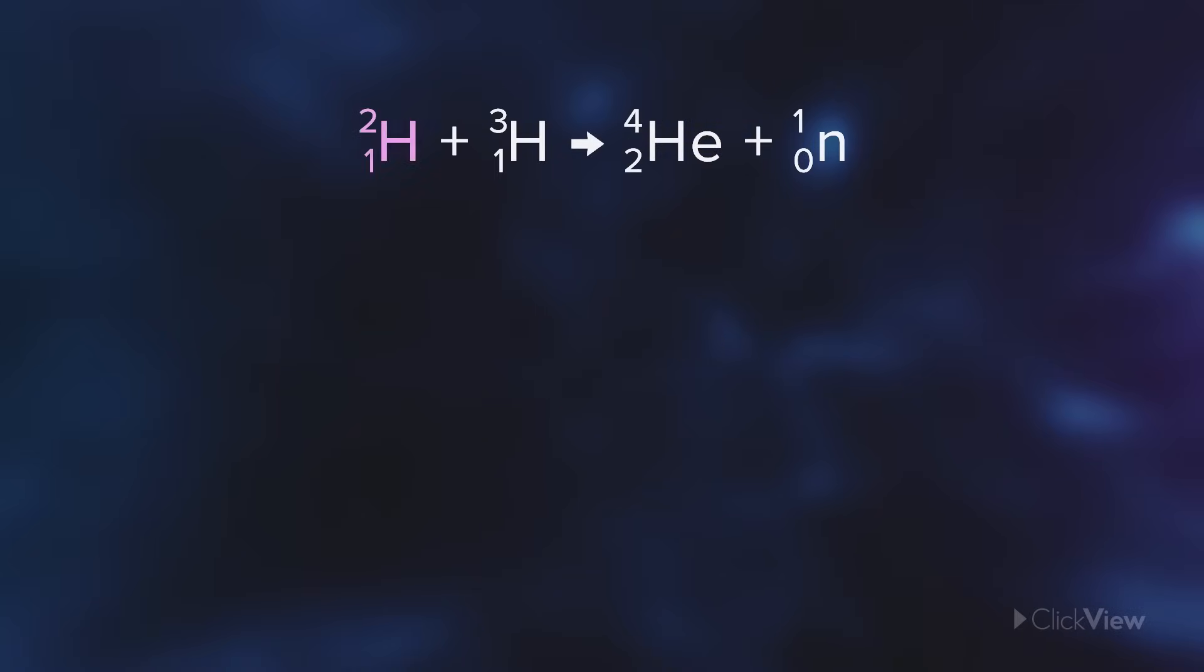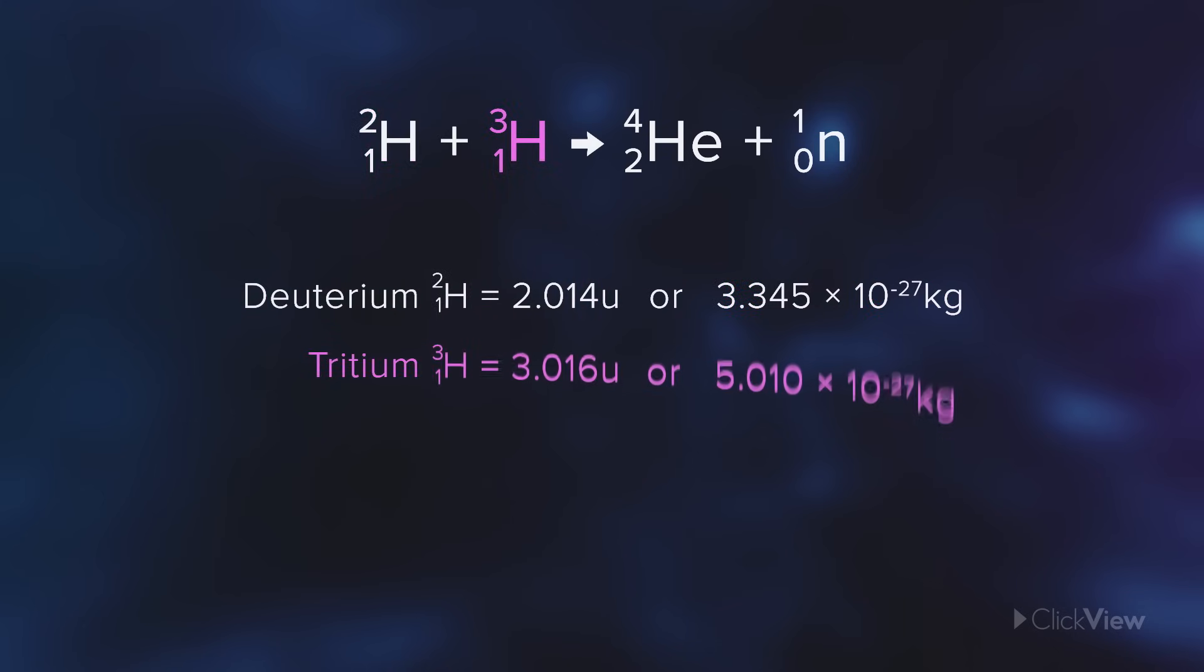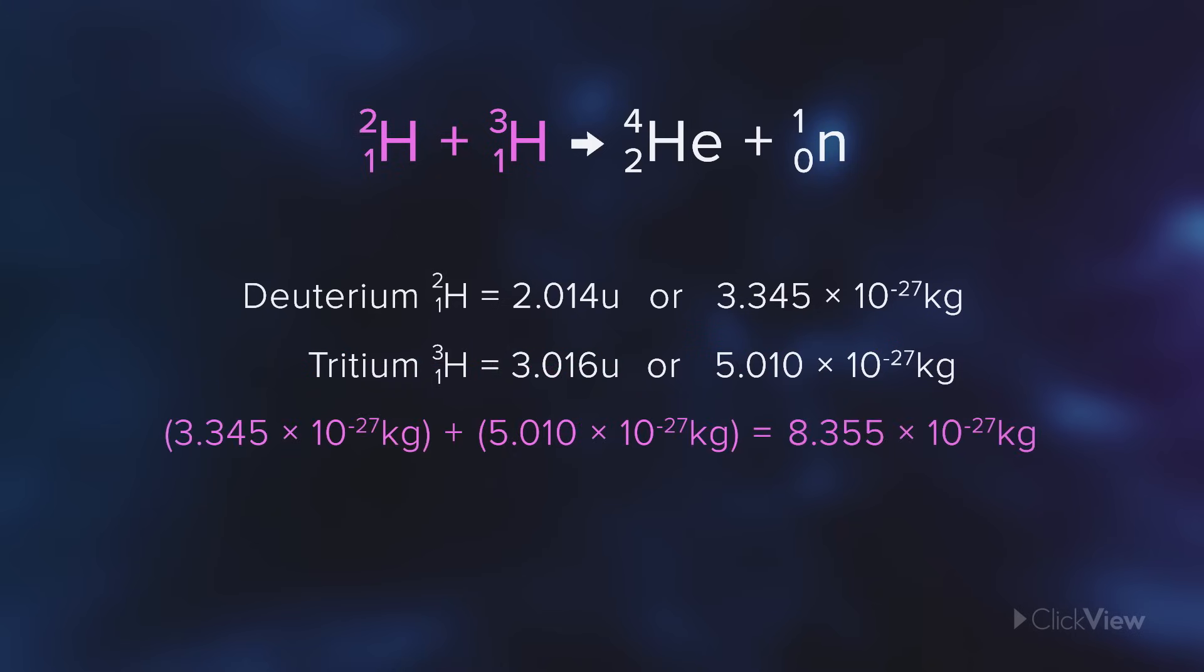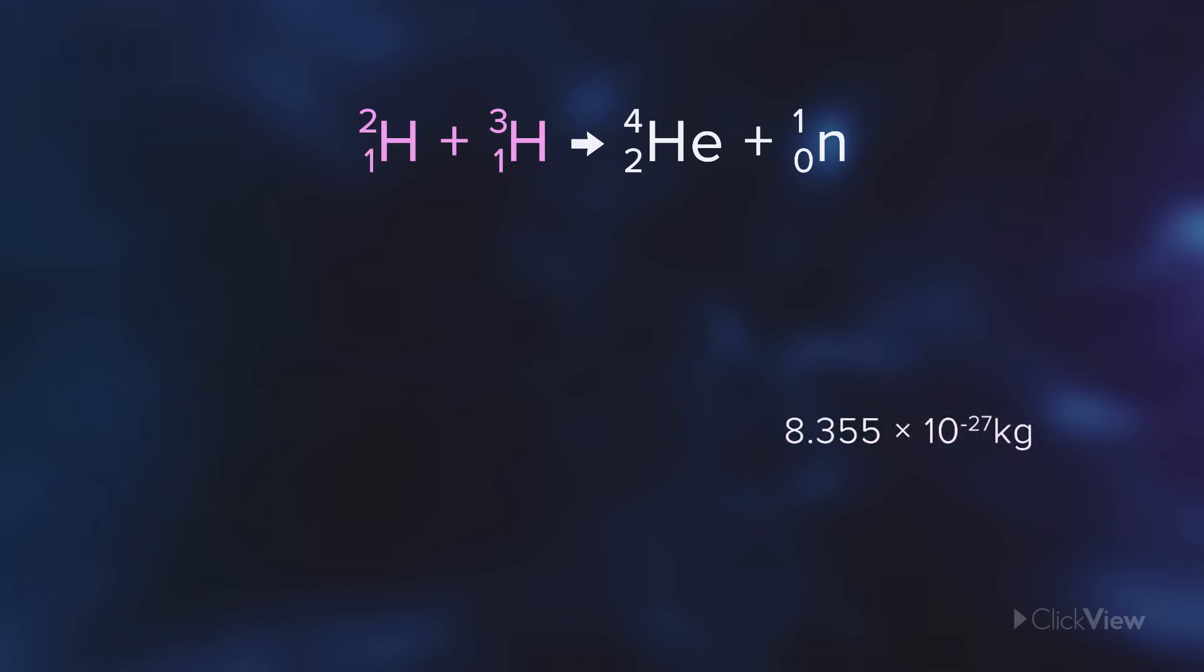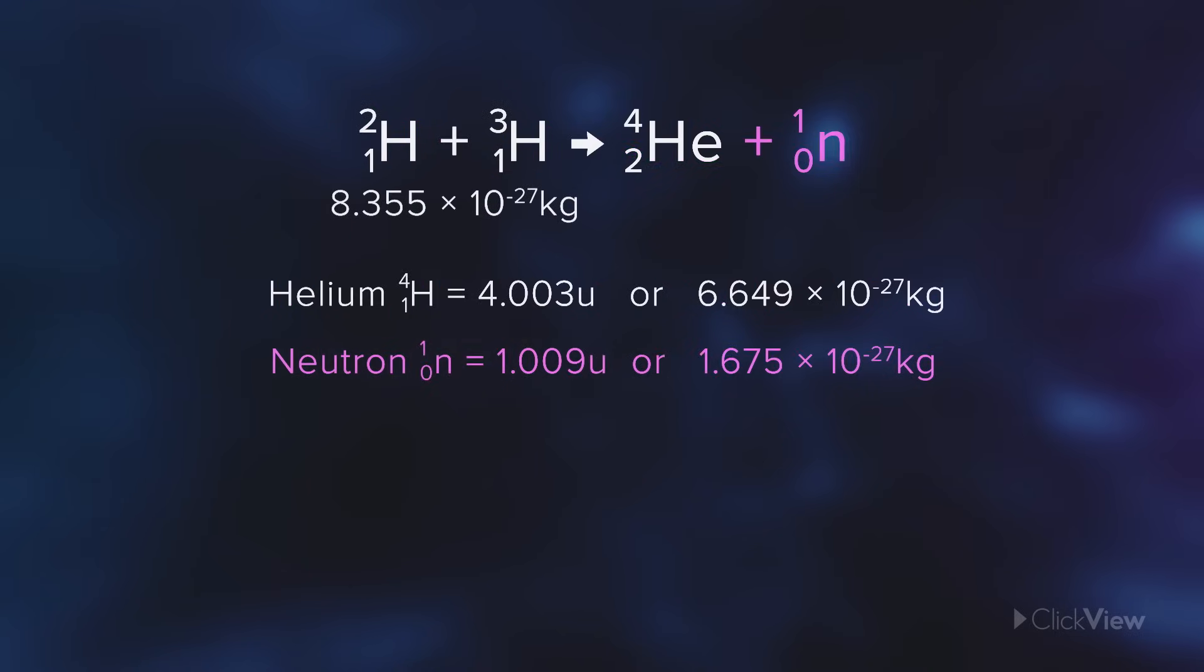The mass of a single atom of deuterium can be rounded off to about 3.345 times 10 to the negative 27 kilograms. The mass of the tritium is about 5.01 times 10 to the minus 27 kilograms. Both masses add up to 8.355 times 10 to the minus 27 kilograms. But in the form of helium plus a free neutron, the total mass is just 8.324 times 10 to the negative 27 kilograms.